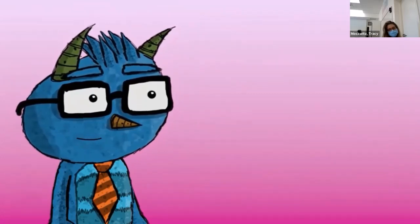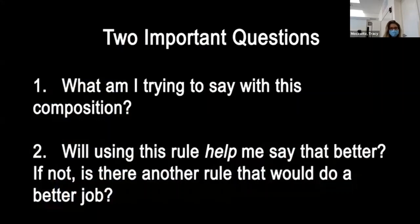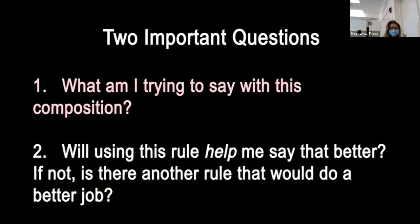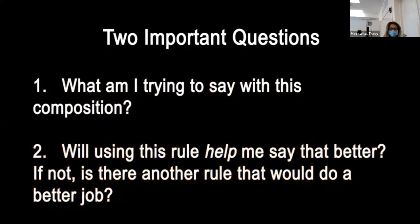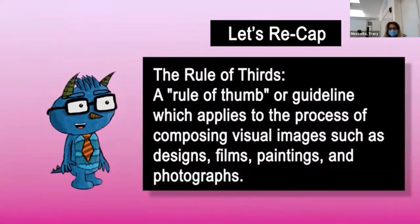In other words, when you understand each element and principle and what they do, you can better understand how they can help you visually communicate. When confronting any choice about rules of composition, ask yourself the most important two questions in an artist's toolkit. First, what am I trying to say with this composition? And second, will this rule help me say this better? If not, is there another tool that could help me do the job better? To wrap things up, let's recap. In this episode, we looked at what I think is one of the most helpful compositional tools in your tool belt: the rule of thirds.